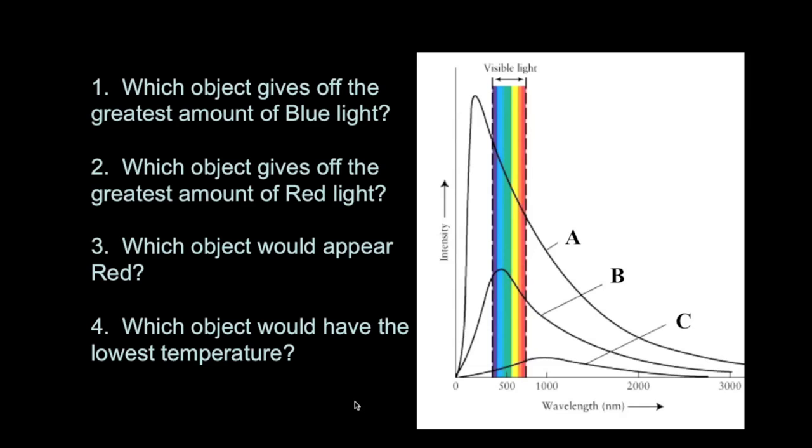Finally, which object would have the lowest temperature? Remember, Wien's law says that the peak wavelength or wavelength of the peak of the spectral curve is inversely proportional to the temperature. So, the bigger or hotter the temperature, the shorter the wavelength of the peak. A has a peak at the shortest wavelength, which means A is definitely the hottest, and then B, and then finally C. C has the longest wavelength of the peak, which means it's at the lowest temperature.